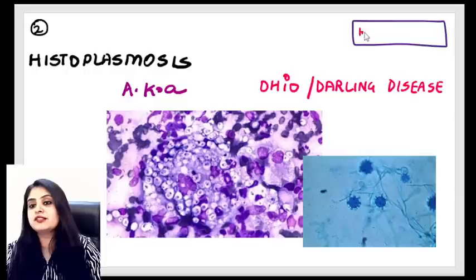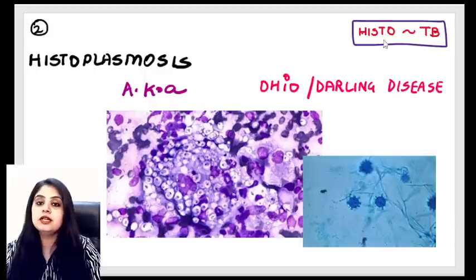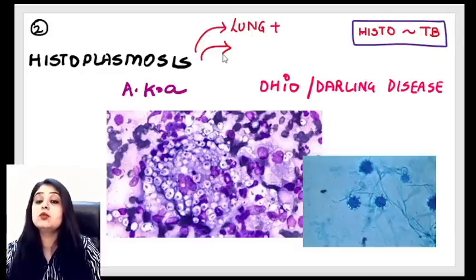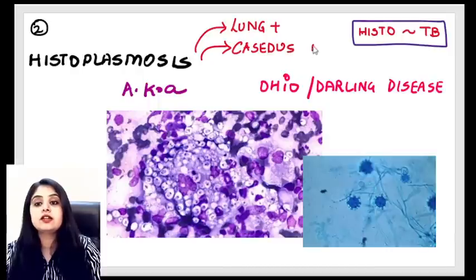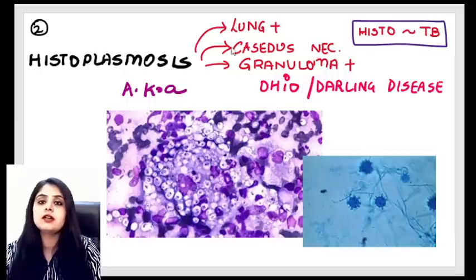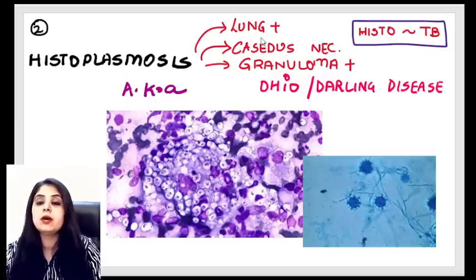Next: P for Paracoccidioidomycosis, known as South American blastomycosis. To avoid confusion: B comes before P alphabetically, and North is above South, so Blastomycosis = North American, Paracoccidioidomycosis = South American. Paracoccidioidomycosis has two M features: Mickey Mouse appearance (spores look like Mickey Mouse ears) and Mariner's wheel appearance.